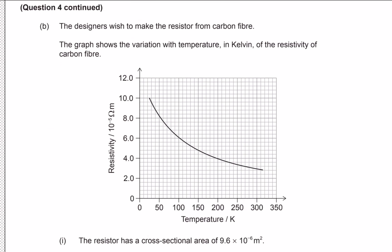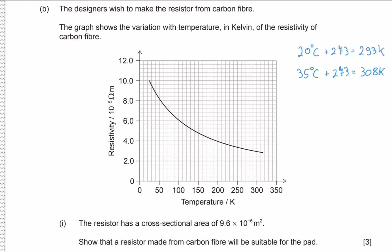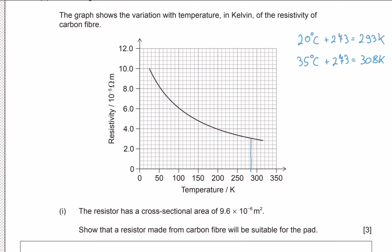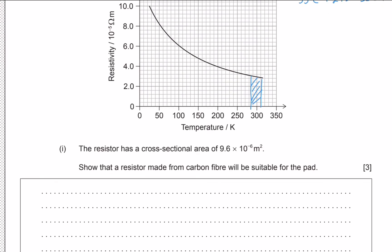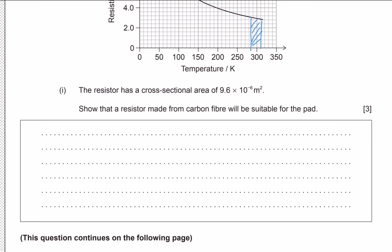We convert the operating temperatures to Kelvin by adding 273: 20°C becomes 293 K and 35°C becomes 308 K. These are the temperatures our resistor operates between. Using the formula from the data booklet, R = ρL/A, where ρ is resistivity, L is length, and A is cross-sectional area, we rearrange to find resistivity: ρ = RA/L.